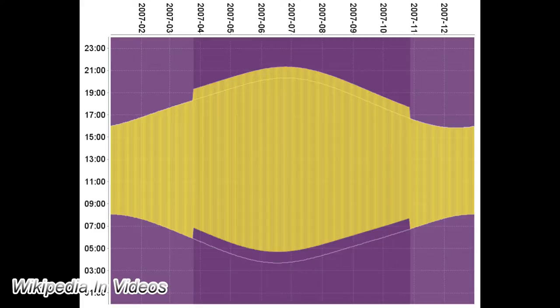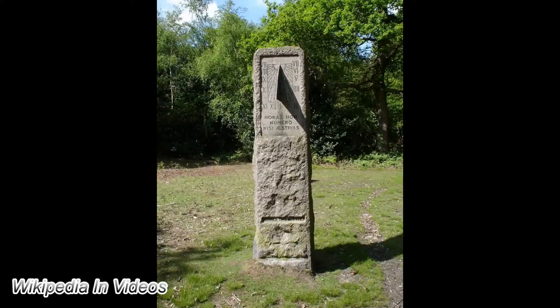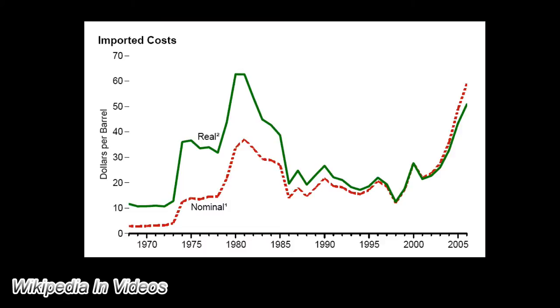George Hudson proposed the idea of daylight saving in 1895. The German Empire and Austria-Hungary organized the first nationwide implementation, starting on April 30, 1916. Many countries have used it at various times since then, particularly since the 1970s energy crisis.